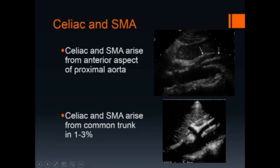In 1 to 3% of patients, the celiac artery and the SMA arise from a common trunk. This is the common trunk coming off here and giving off the celiac and the SMA from the abdominal aorta.